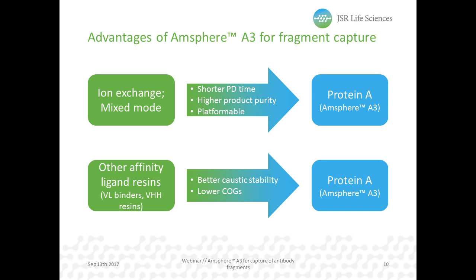When we compare our protein A to other affinity ligands produced specifically to bind a certain antibody domain, protein A has the advantage of very high caustic stability, allowing for a high number of runs and lowering the overall cost per gram of product purified.